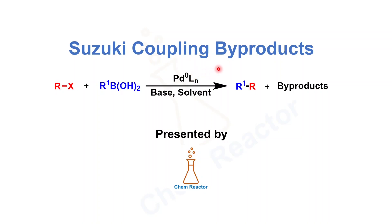It is very important to know the byproducts because if you are doing this reaction on a smaller scale, we basically do column purification, so we can isolate our expected product and discard whatever byproducts form. But if you are working on a larger scale in process development, then you definitely want to know what impurities or byproducts are forming in your reaction, because if your byproducts have higher toxicity, that's not good for your APIs.